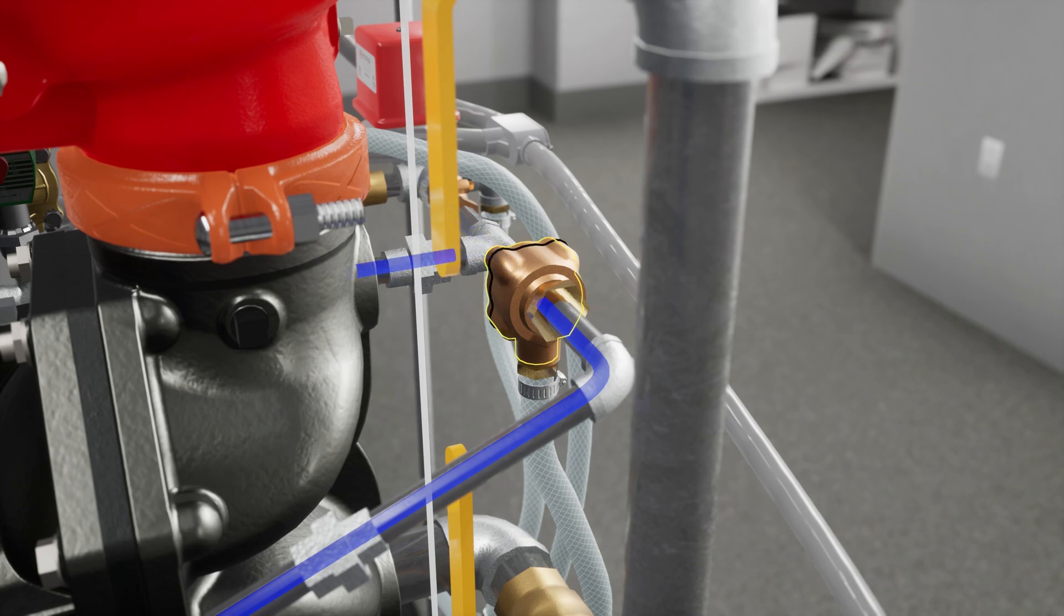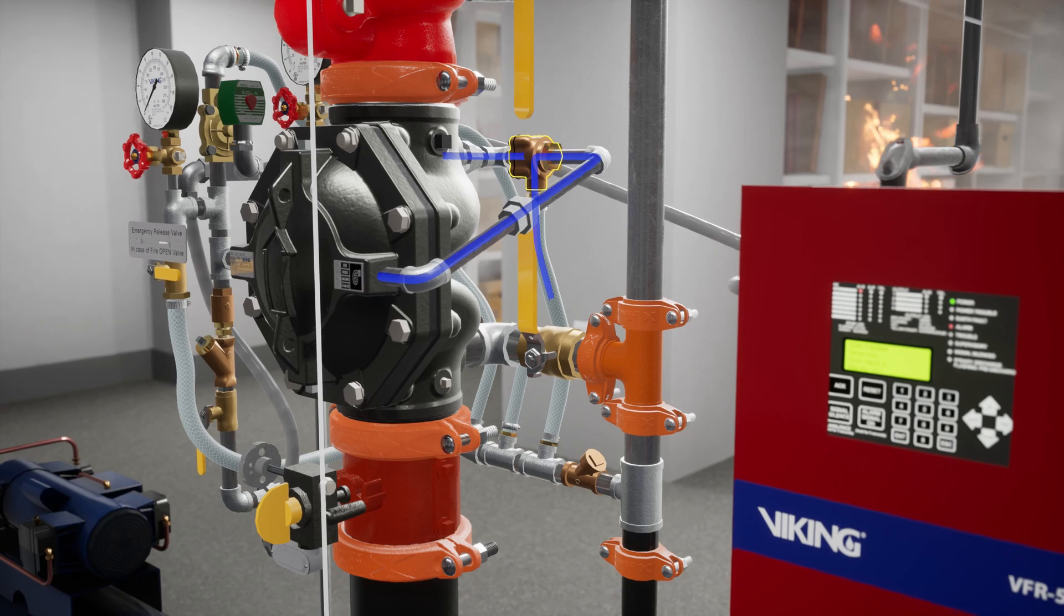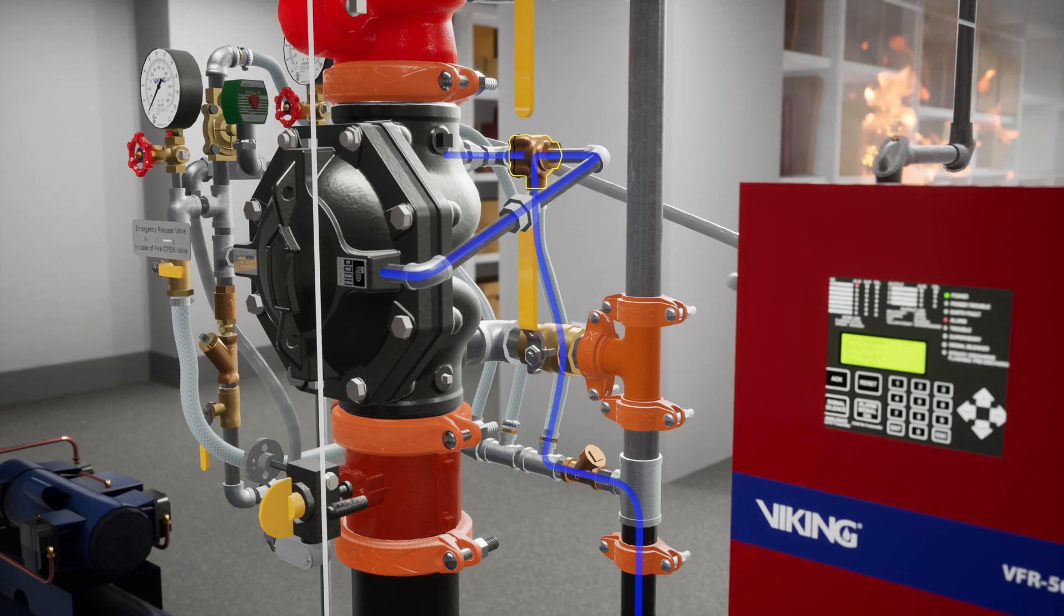The PORV is activated when water from the main supply forces the push rod open, redirecting prime water out into the drain.